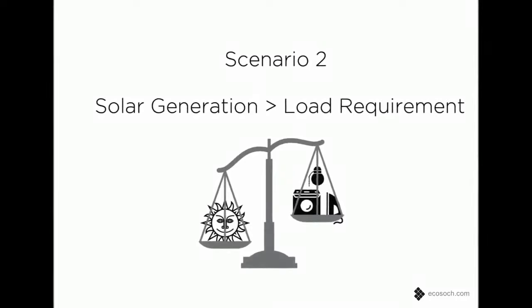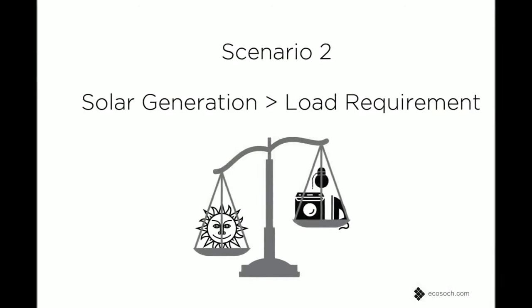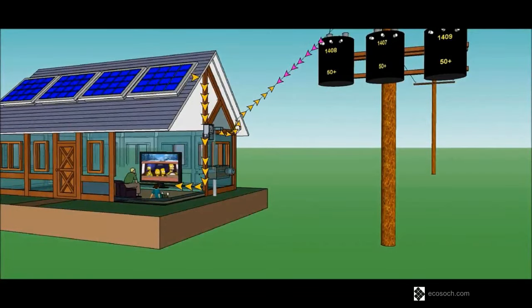When solar generation is greater than the load, the generated solar power will support the existing loads first and the excess will be sent out to the grid. This is called export to the grid.